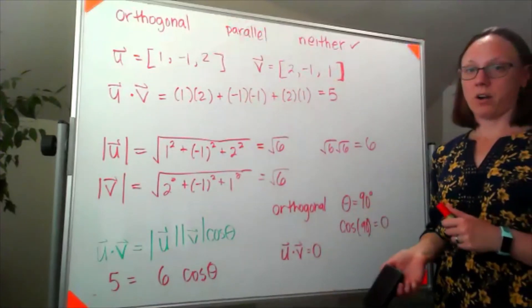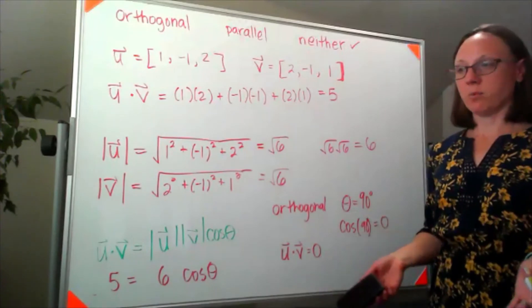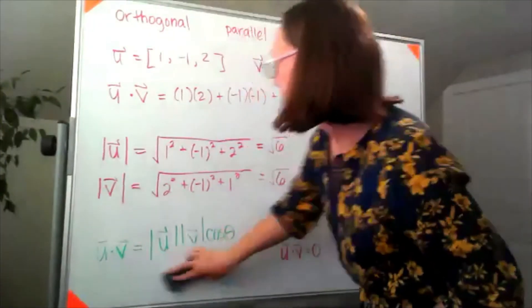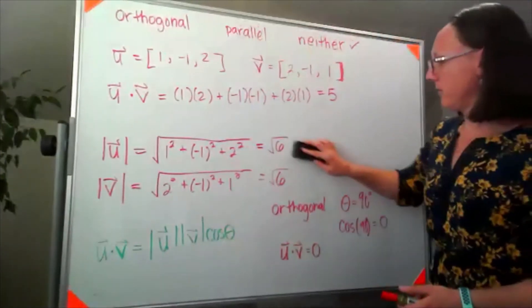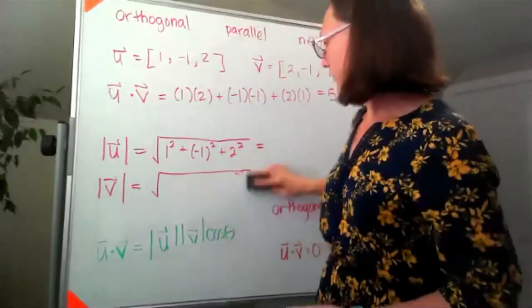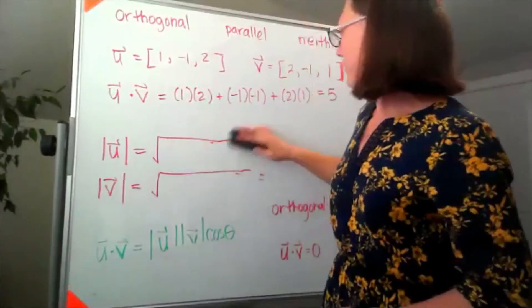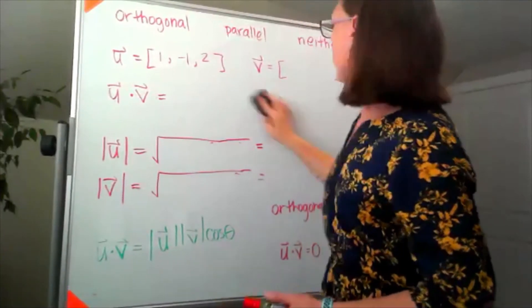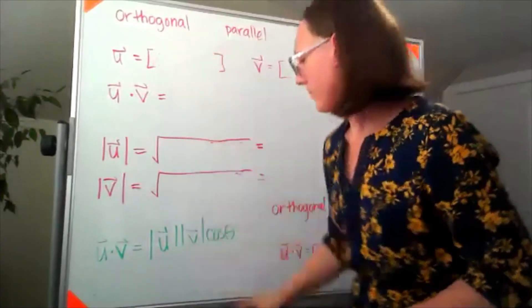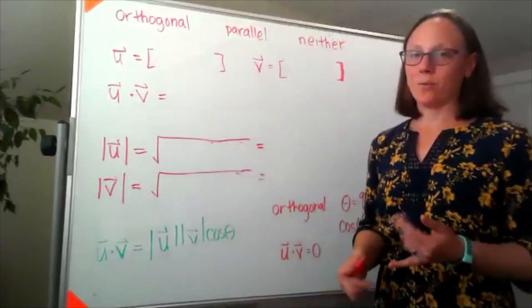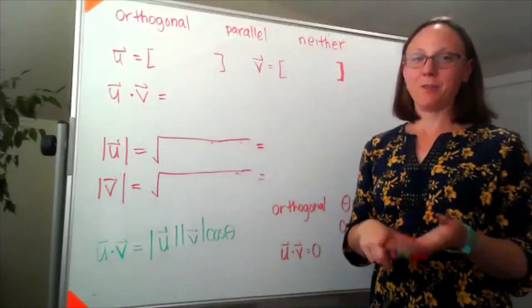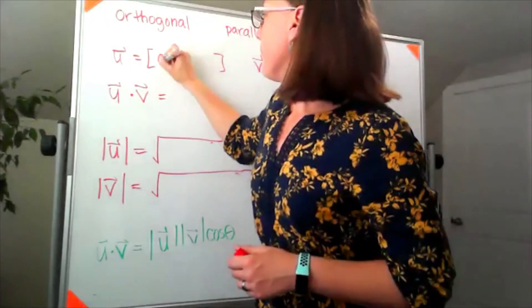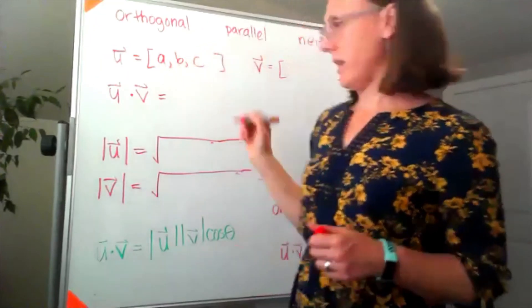The last part of 22a we do this more generically without having numbers. Now if I were guessing, we already found one that was parallel and one that was neither. My guess is these will be orthogonal because that's what I would do if I were writing a question.